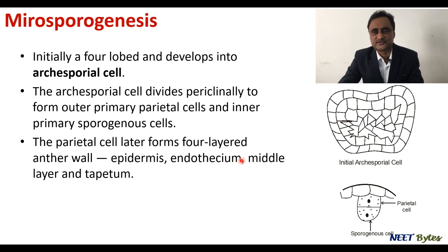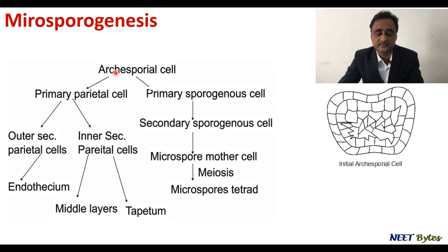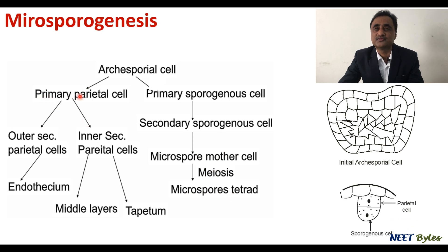The sporogenous cell is a diploid structure and after further development it undergoes meiotic division to form haploid spores. The archesporial cell forms primary parietal cells and primary sporogenous cells. Primary sporogenous cells form secondary sporogenous cells, which form the microspore mother cell — all diploid. Outer secondary parietal cells form endothecium, and inner secondary parietal cells form middle layers and tapetum.